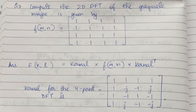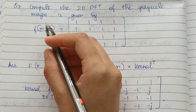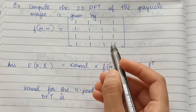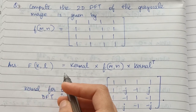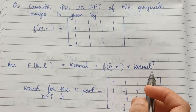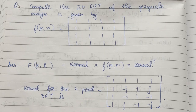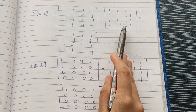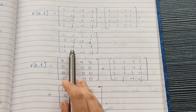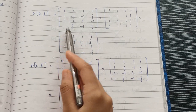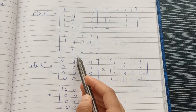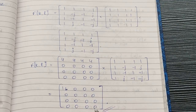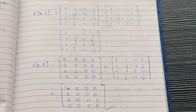Now let's look at one more question: compute the 2D DFT of the grayscale image given by f(m,n) as this matrix — which is our input image. For 2D DFT, the formula is F(k,l) = kernel × input image × kernel^T. We take the kernel, multiply by the input image, then multiply by the transpose of the kernel — where we get the transpose by interchanging rows and columns. Multiplying these gives our final answer. So that's it for this lecture, I will see you in the next one.